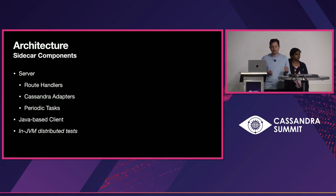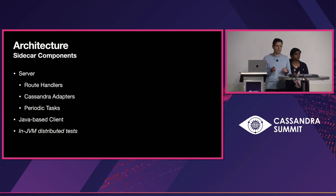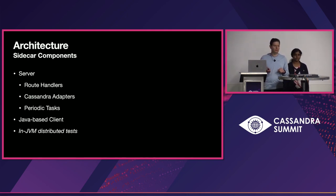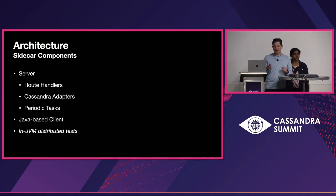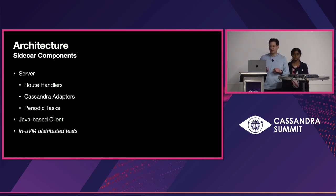The NJVM distributed testing was a massive undertaking to bring to the Sidecar project. This allows us to build a more robust project, and we have more confidence that the project we are putting out there is well covered in terms of testing.